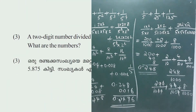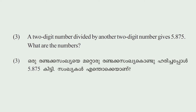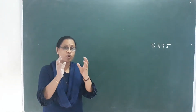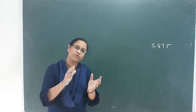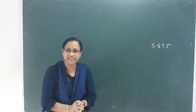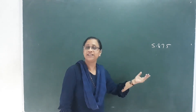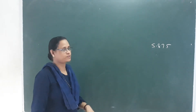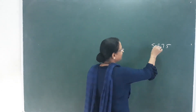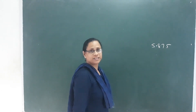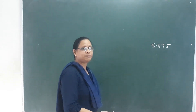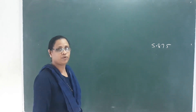The decimal form is 0.875. This two-digit number divided by another two-digit number gives 5.875. What are the numbers? We choose a two-digit number to divide by another two-digit number, and we choose the decimal form.